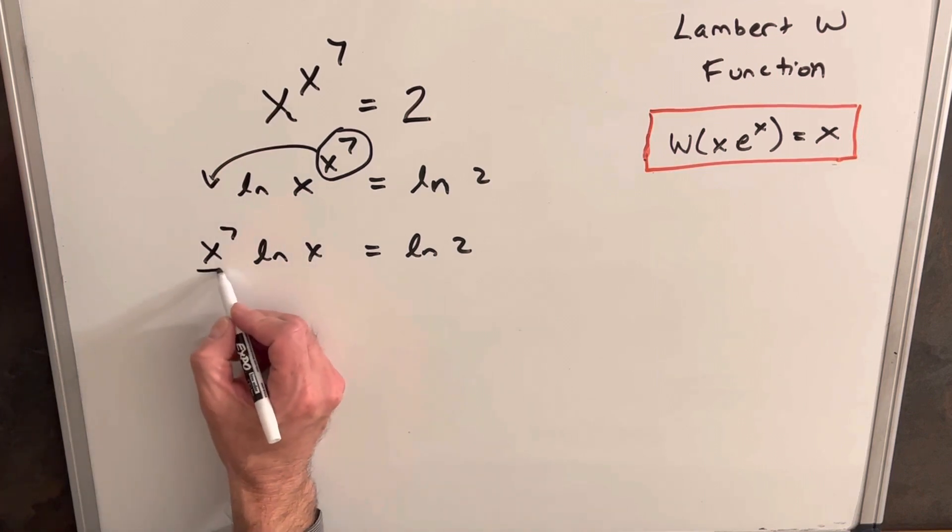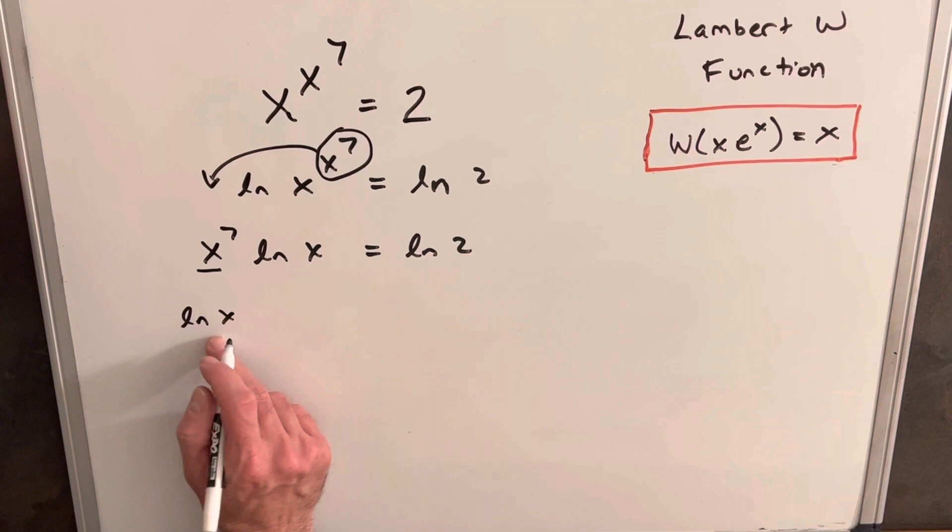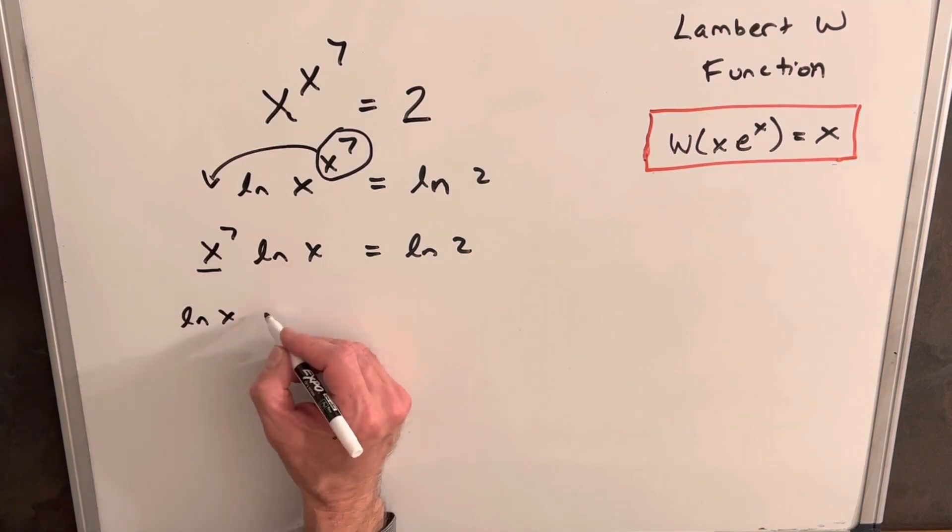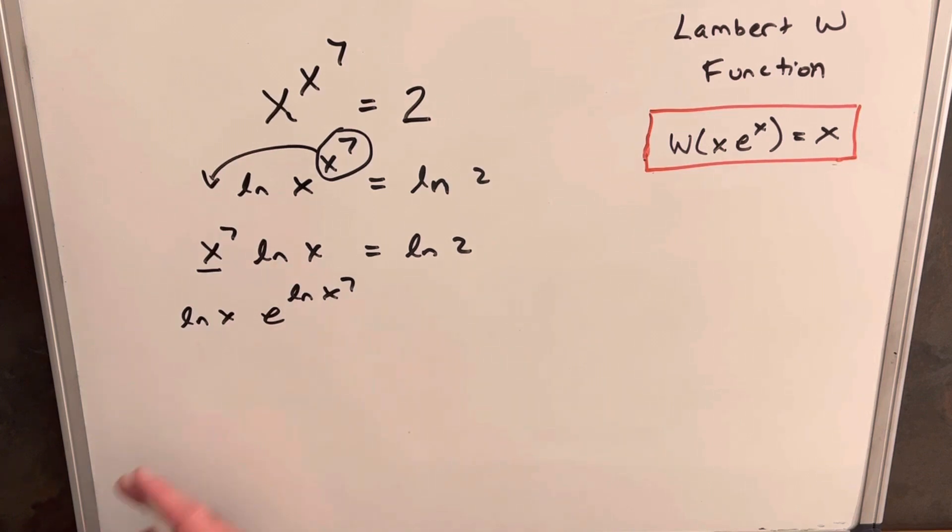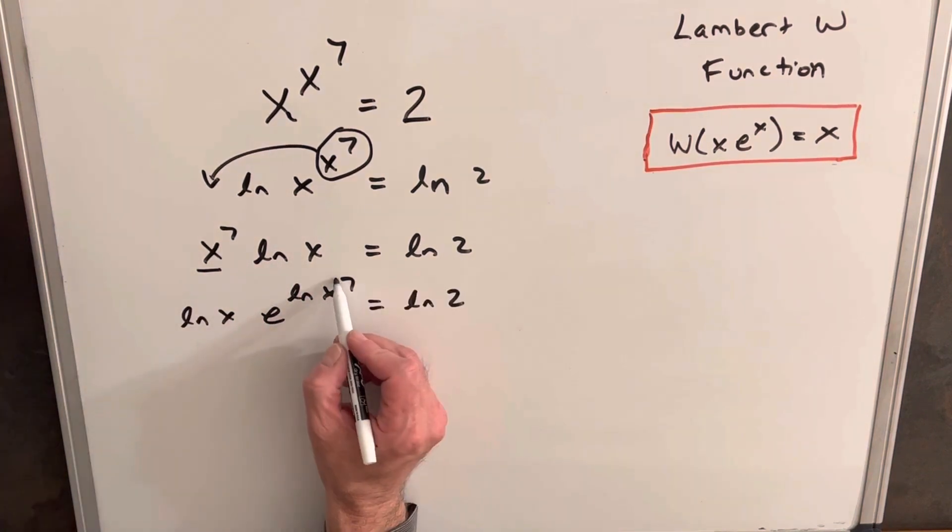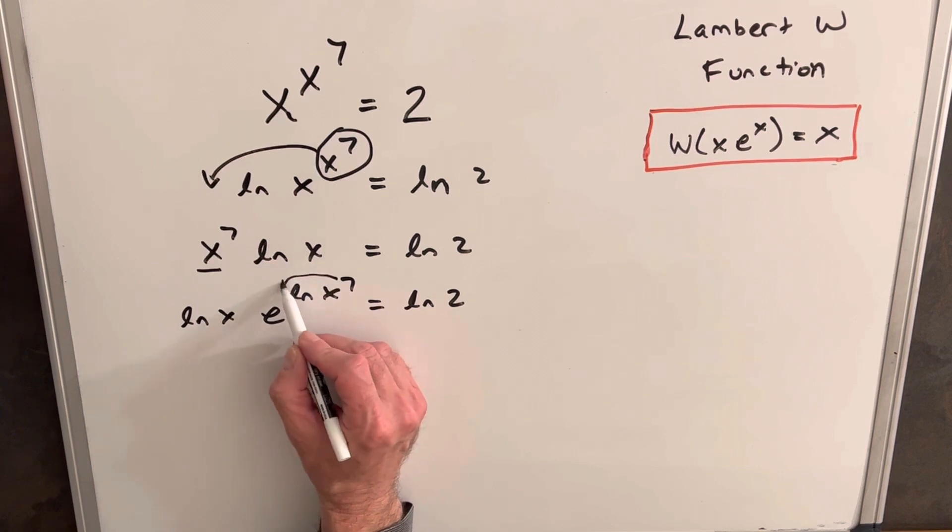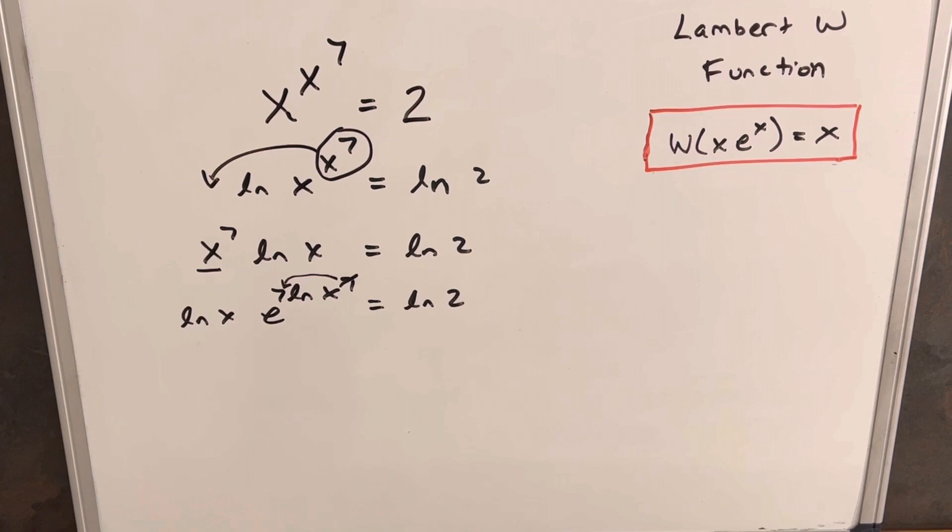We'll take this and rewrite it. So we'll bring our ln x over here, and we'll write x to the 7th as e to the ln x to the 7th. Noticing if you cancel e and ln, we get back our x to the 7th. Here what I want to do is let's just bring this 7 out front here, so we'll have 7 ln x.